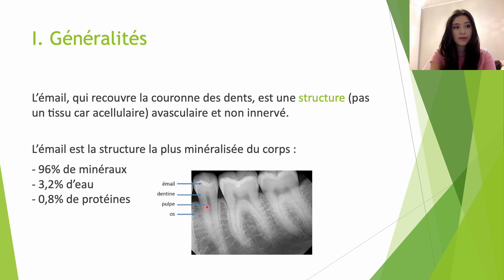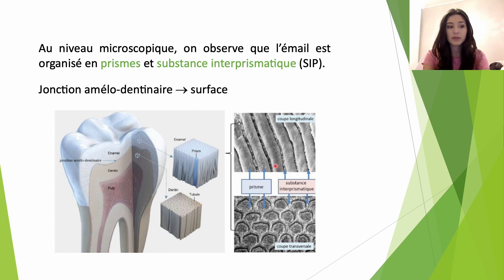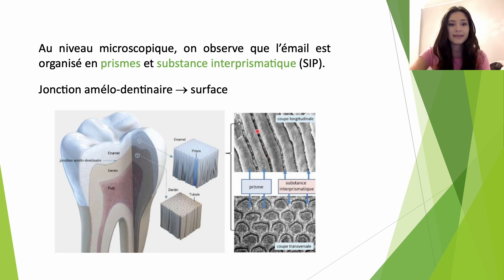On voit également la pulpe dentaire au milieu et on sait qu'elle n'est pas du tout minéralisée. Si l'on regarde au niveau microscopique, on va voir que l'émail est organisé en prismes et en substance interprismatique. Sur une coupe longitudinale, on va voir que les prismes de l'émail sont des sortes de tubes qui parcourent l'émail de la jonction amélo-dentinaire jusqu'à la surface de la dent. Ils vont être entourés de substance interprismatique.